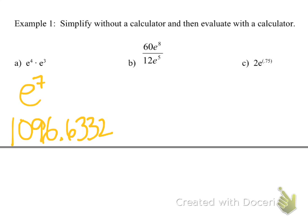This next example, 60e^8 over 12e^5. Well, 60 divided by 12 is 5. And then we're going to subtract our exponents and get 5e^3. Then we can put this in our calculator and get 100.4277.